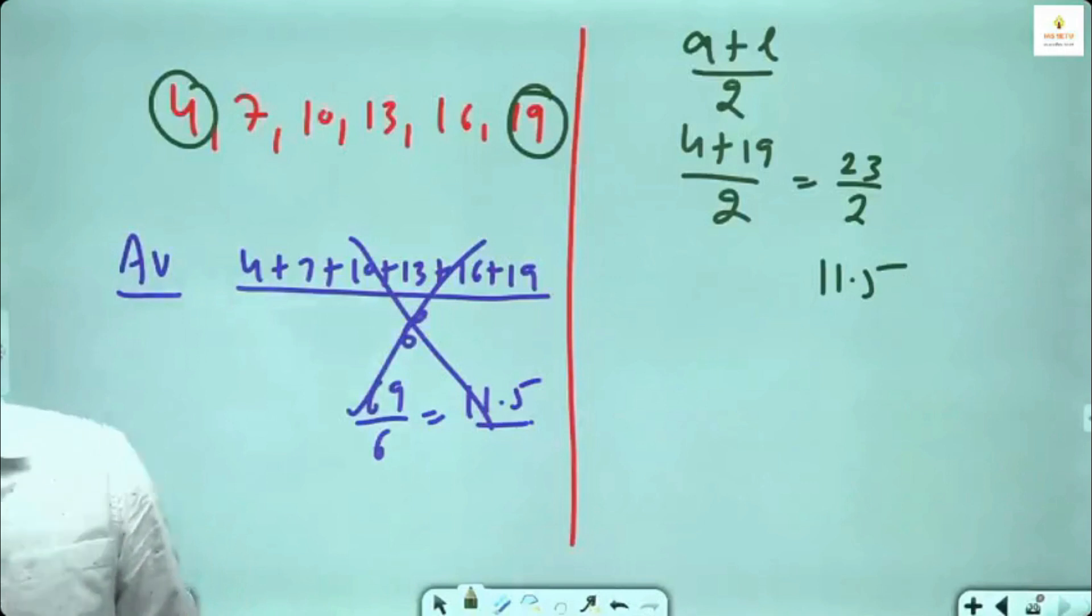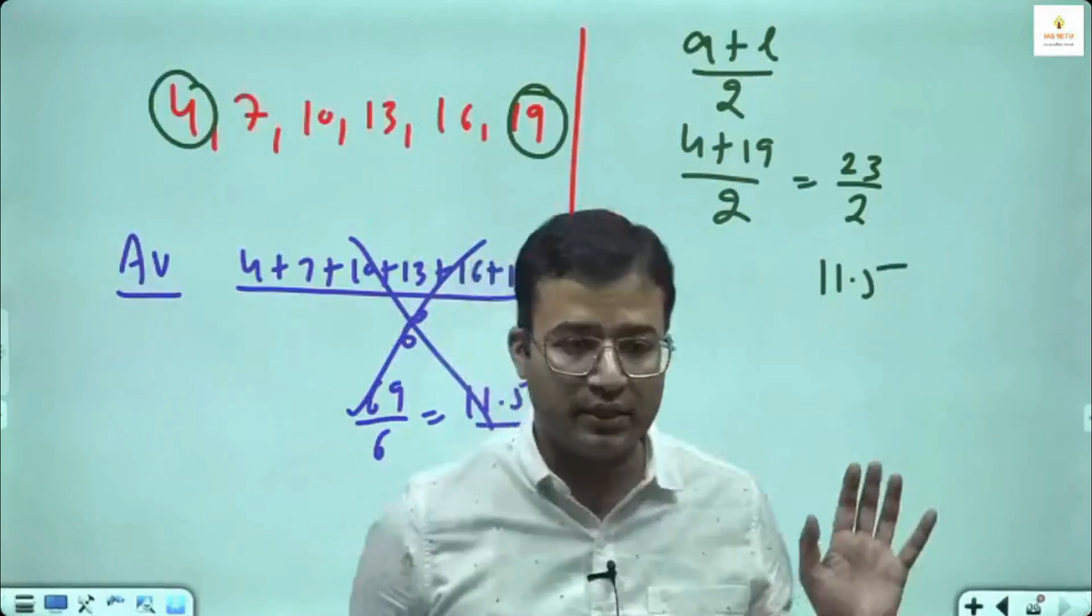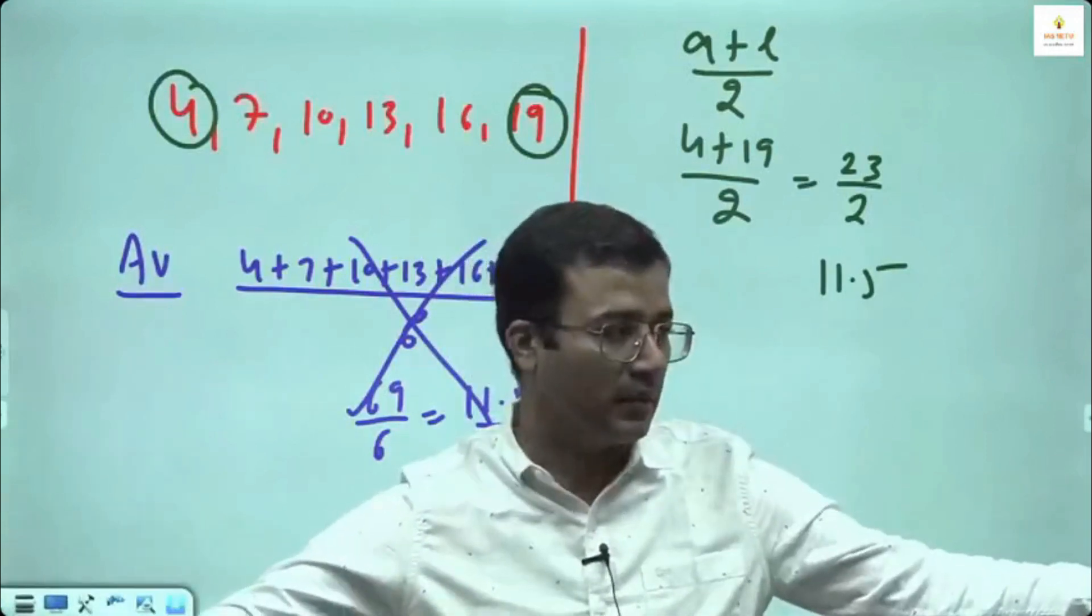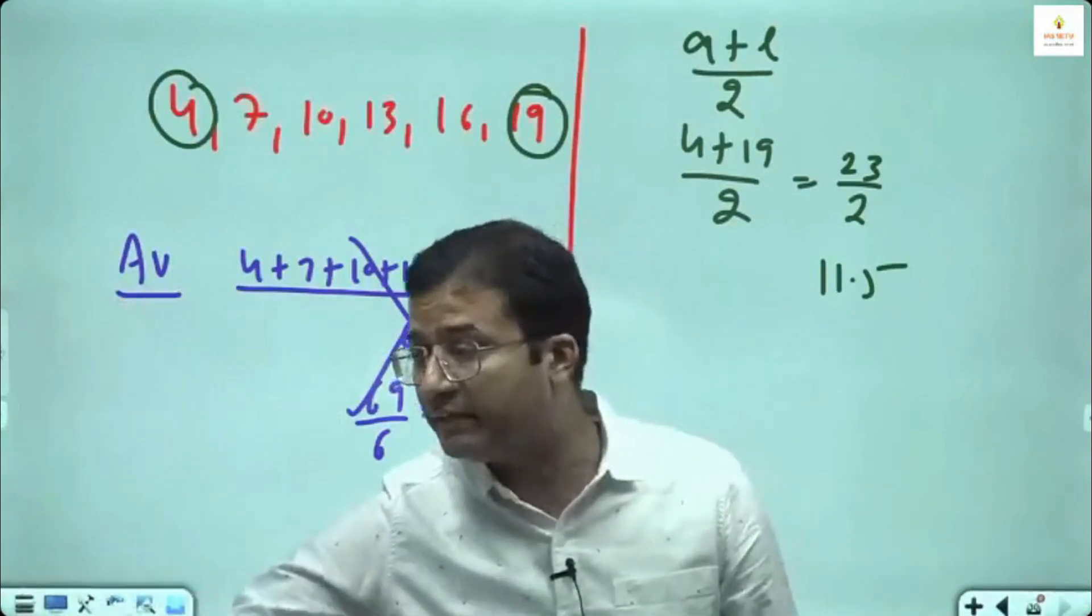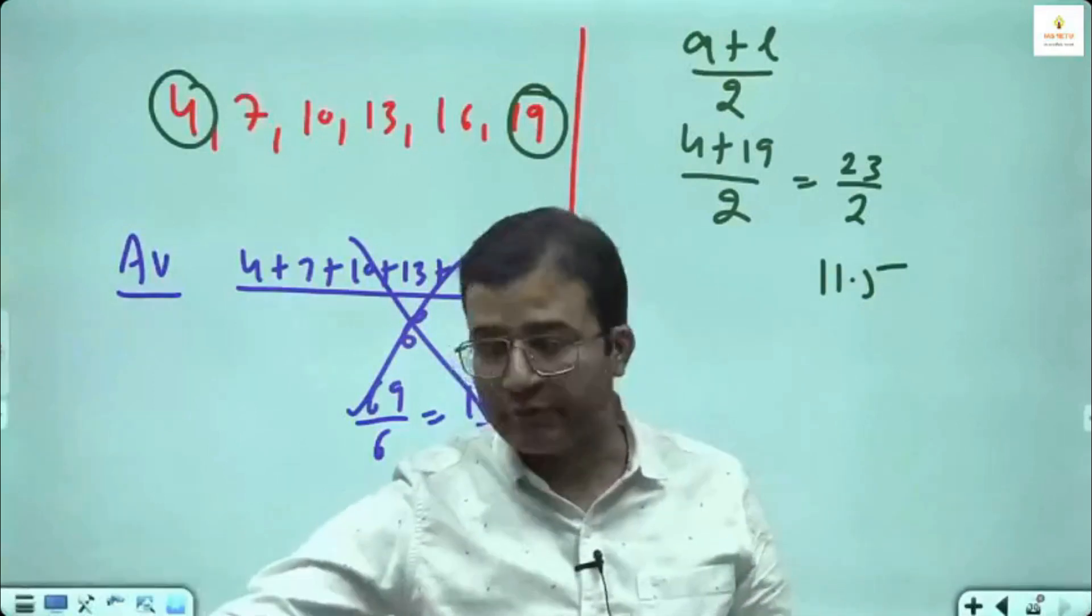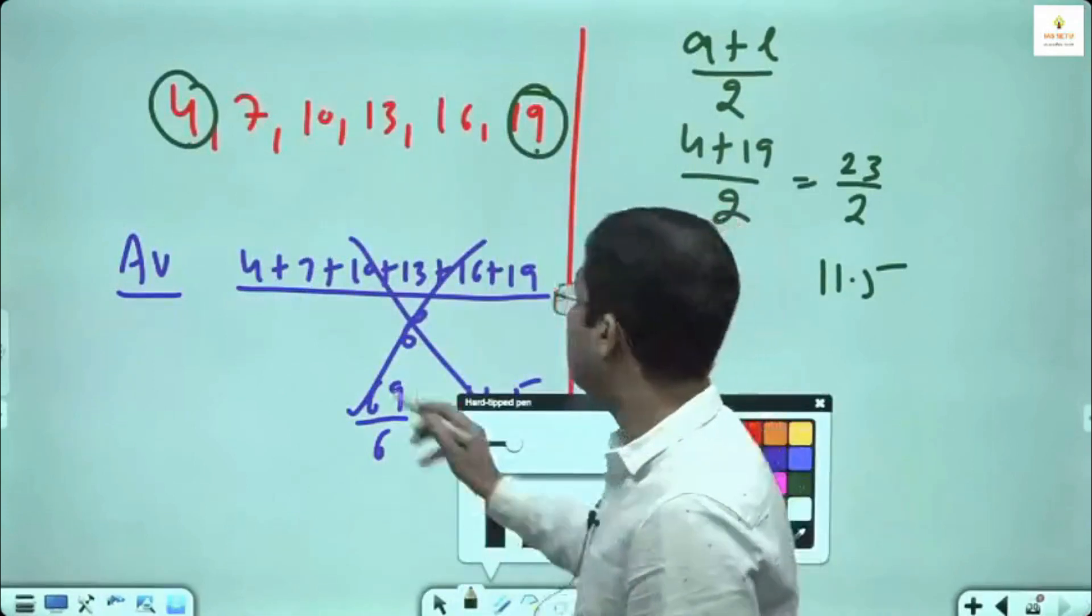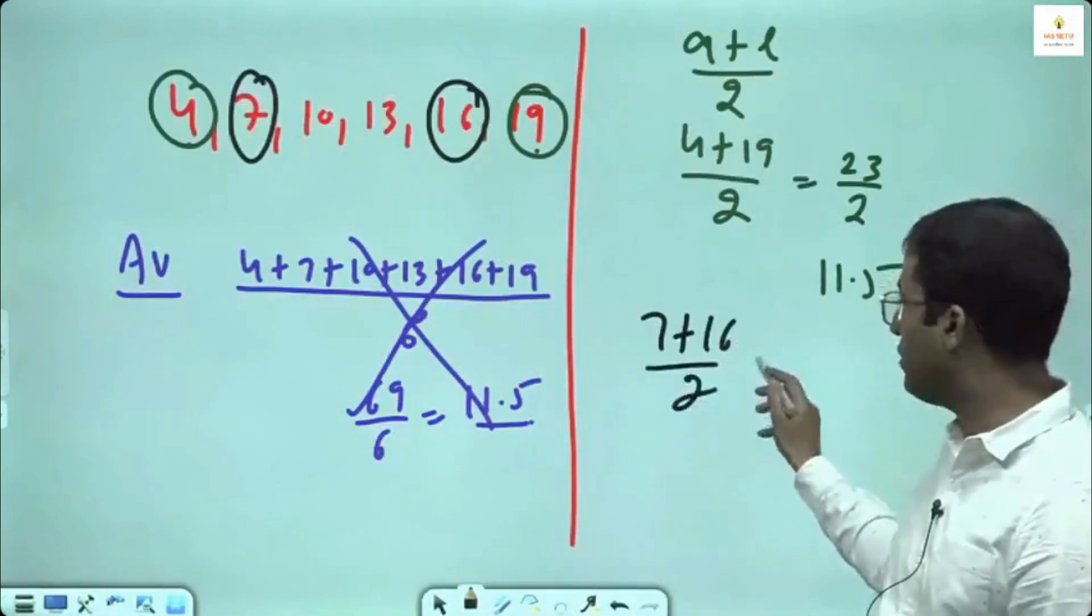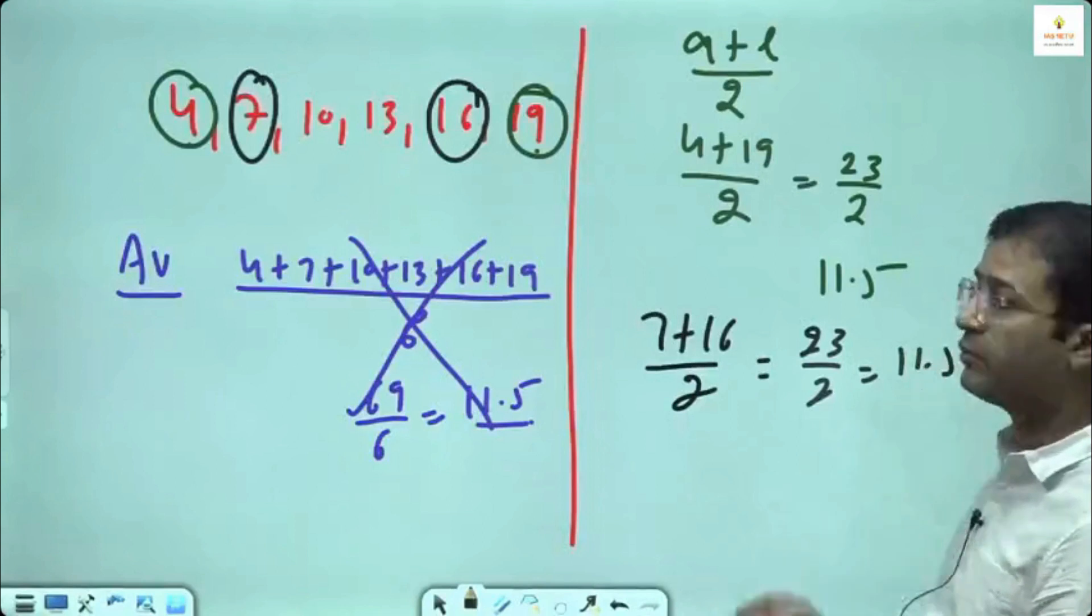Here pairs make from the top. First term from the starting and the last term make a pair, which itself is sufficient to tell you the average. Second term from starting and the second last also sufficient. 7 plus 16 divided by 2 also gives the average, this is 23 divided by 2, 11.5.